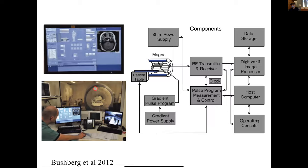Putting it all together: the magnet is in an RF-shielded room (copper walls) to prevent external RF from contaminating the signal. The operator sits outside at a console controlling the gradient and RF systems. Data is digitized and processed — in MATLAB or C — to reconstruct images.